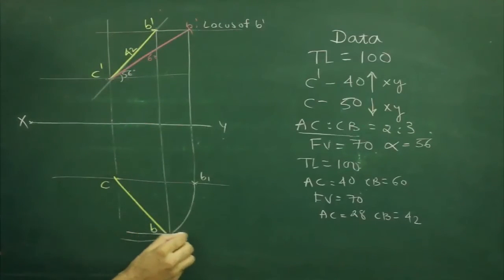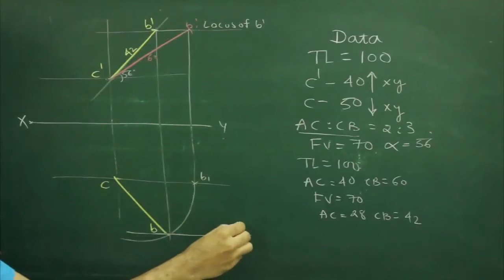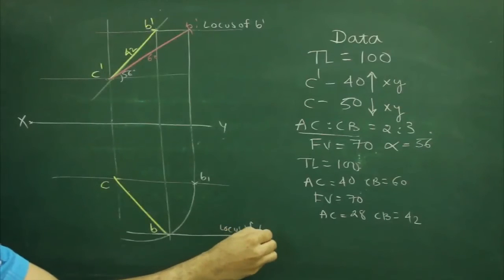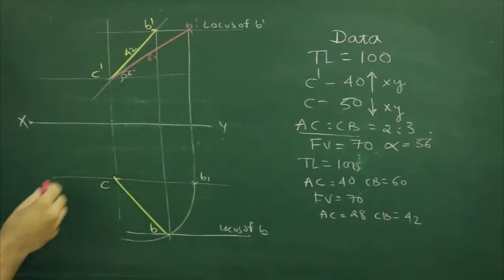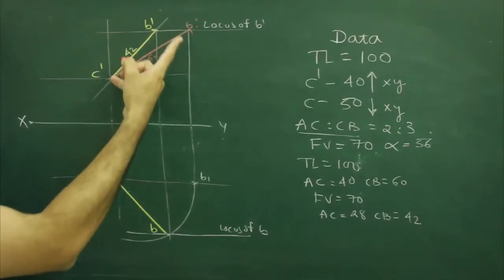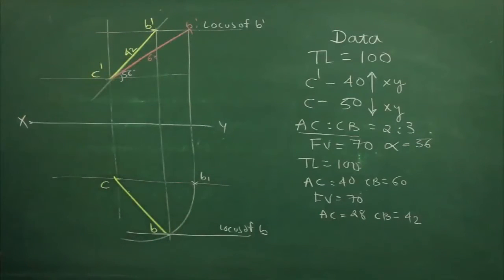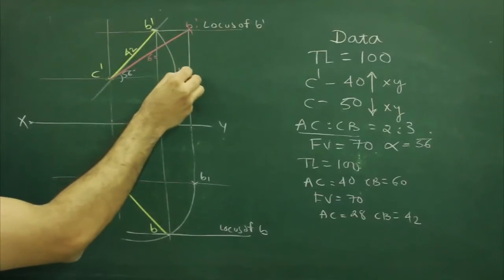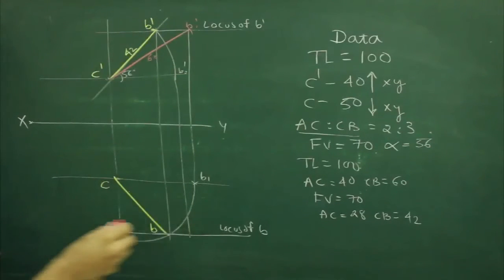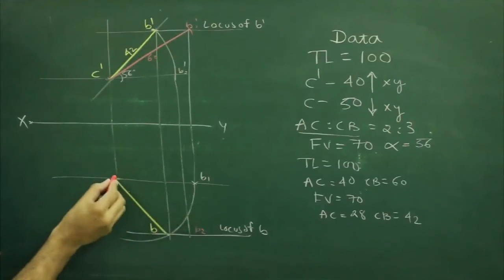So we can draw locus of B. After that we have true length as well, so what we can do, we can mark true length directly or we can project C dash B dash, this will be B2 dash, project straight down wherever it will cut B2.